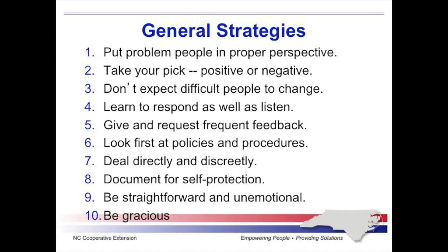Number seven, deal directly and discreetly — choose face-to-face talks over written communication and get to the point. Number eight, document for self-protection. Get potentially troublesome verbal agreements in writing. Send copies to anyone affected as evidence in case a misunderstanding should occur. Number nine, be straightforward and unemotional — remain calm and matter-of-fact. And number ten, be gracious. Someone else's rudeness doesn't give you the right to be rude. Turn a bad situation into your advantage by disarming the offenders, treating them with the kindness you'd like to be shown, sharing credit, and allowing others to feel important. Make friends with your enemies.